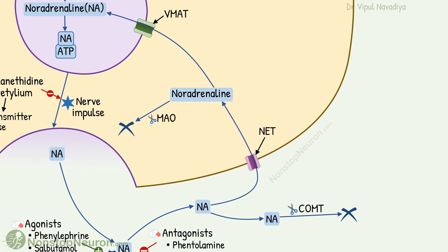The next step in the transmission is the reuptake of noradrenaline back into the nerve terminal by NET. This is blocked by drugs like cocaine and desipramine, so noradrenaline stays in the cleft for longer and continues to stimulate the receptor, thereby increasing adrenergic activity.